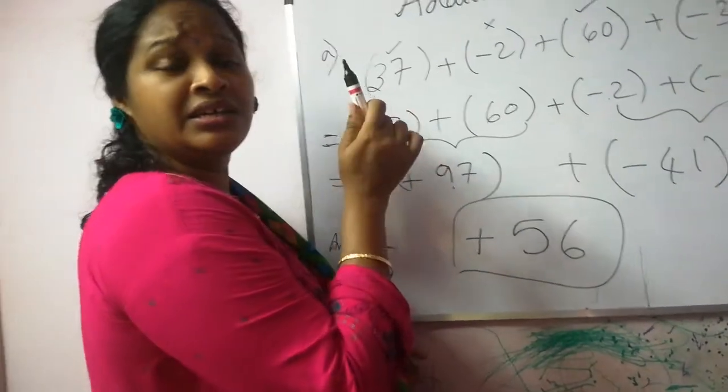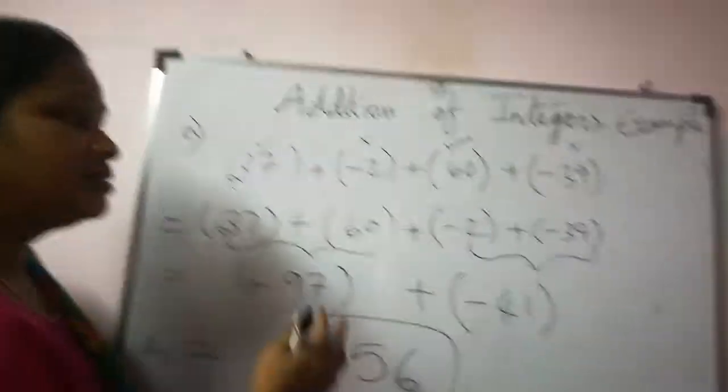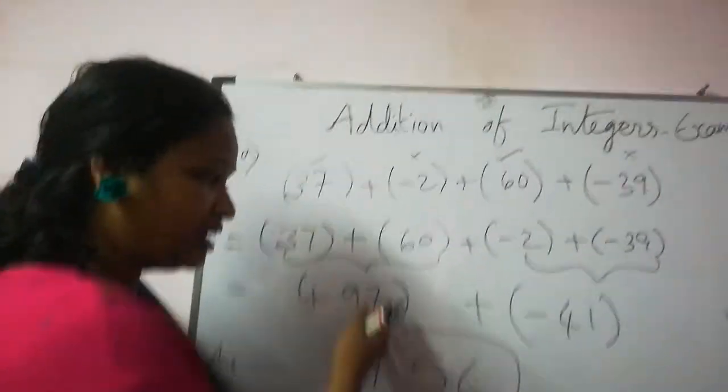So arrange the numbers first according to the signs. Then you add them separately.